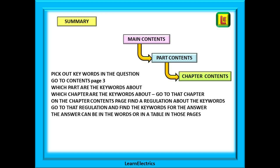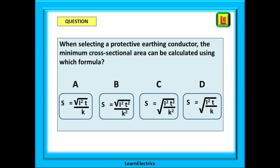So in summary, what is the process? Pick out keywords in the question. Go to the contents on page 3. Determine which part the keywords are about, and which chapter. Go to that chapter. On the chapter contents page, find a regulation about the keywords. Go to that regulation and find the keywords for the answer. The answer can be in words or in a table in those one or two pages.